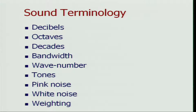What we will talk about are all of these terms: decibels, octaves, decades, bandwidth, wave number, tones, noise — and noise is of two types: pink noise and white noise — and then weighting. I have put it here but probably I will not talk about it today. We will definitely cover weighting, but it will happen maybe a little later in the course. But decibels, octaves, decades, bandwidth, wave number, tones, pink noise, white noise — these are the terms we will definitely learn today.